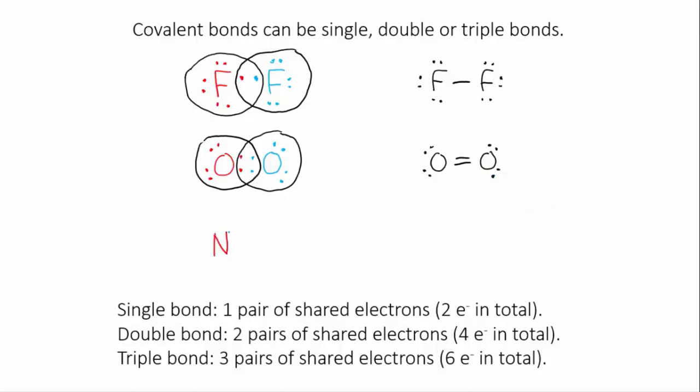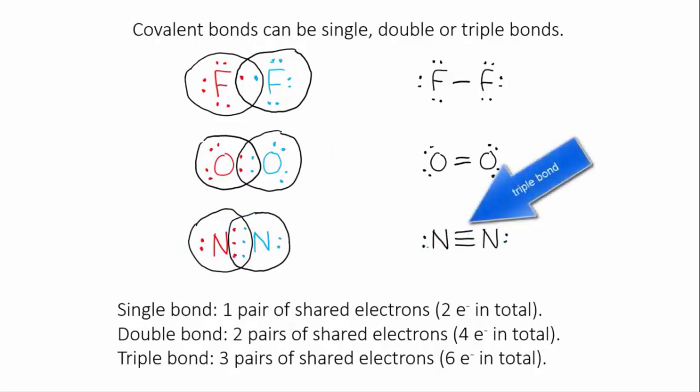Nitrogen has five valence electrons. It requires three more for a full outer shell. So in a similar fashion to oxygen, it shares three electrons, which means the bond is made of three pairs of electrons. This is a triple bond, the strongest kind of covalent bond.